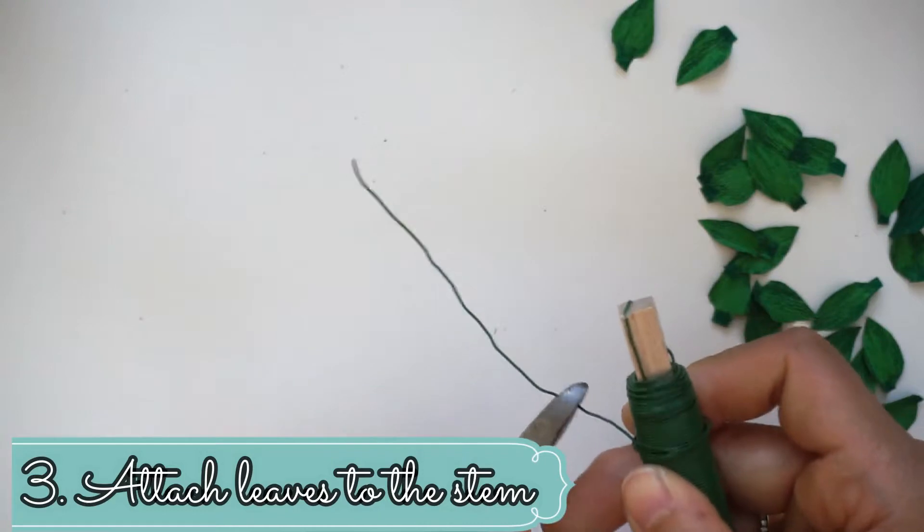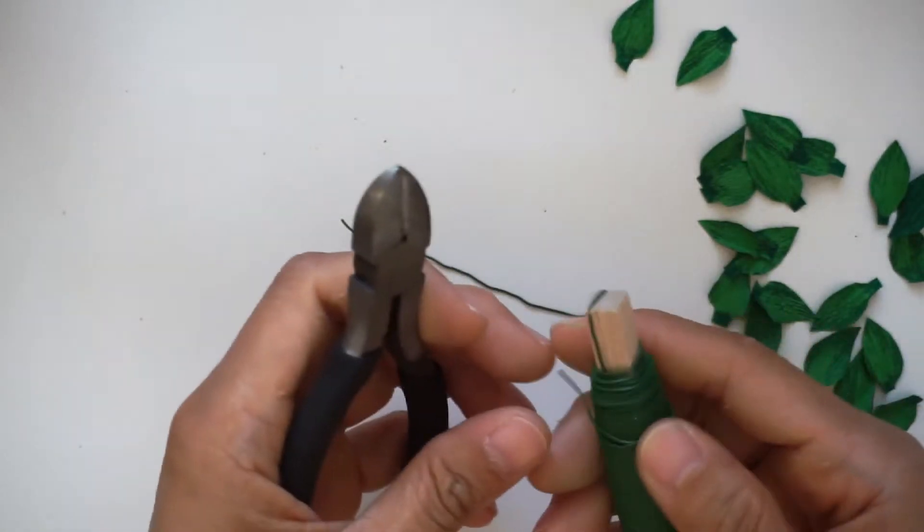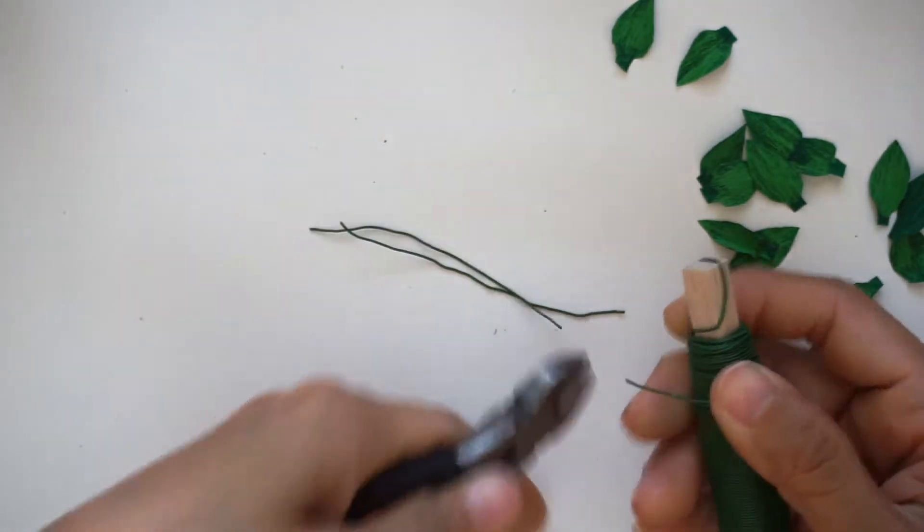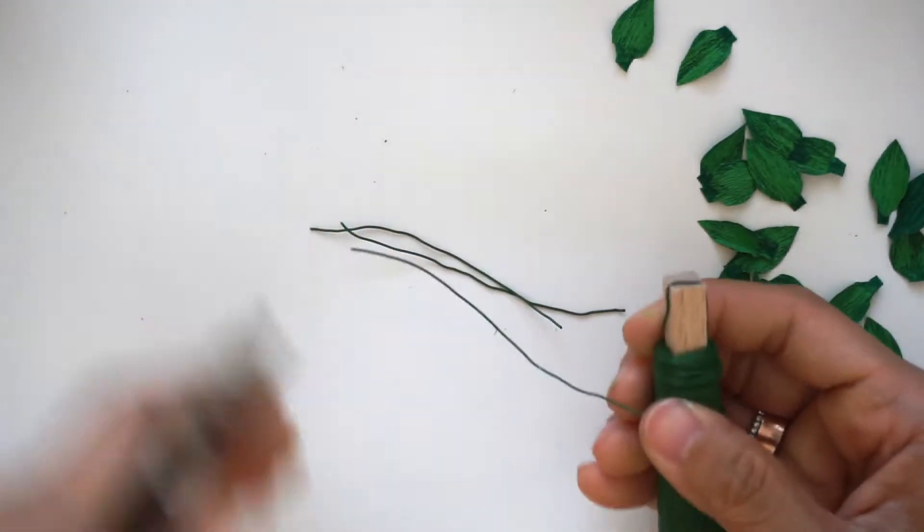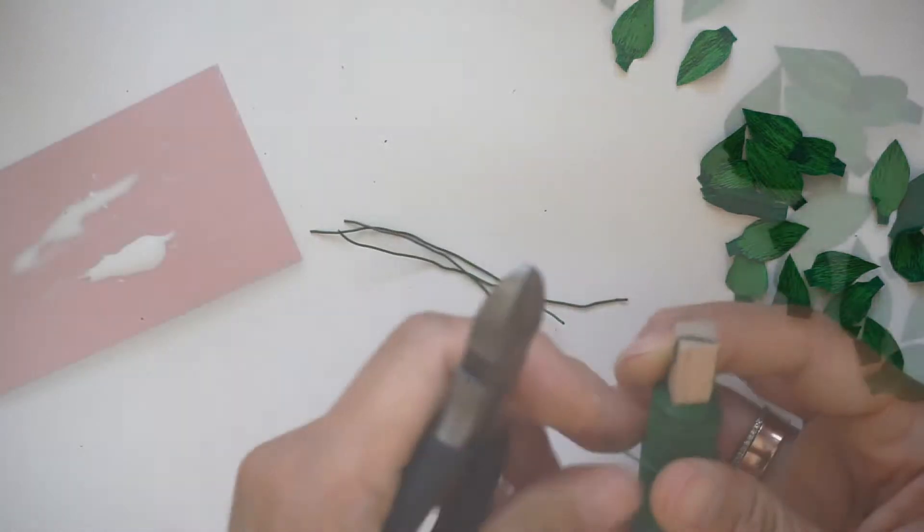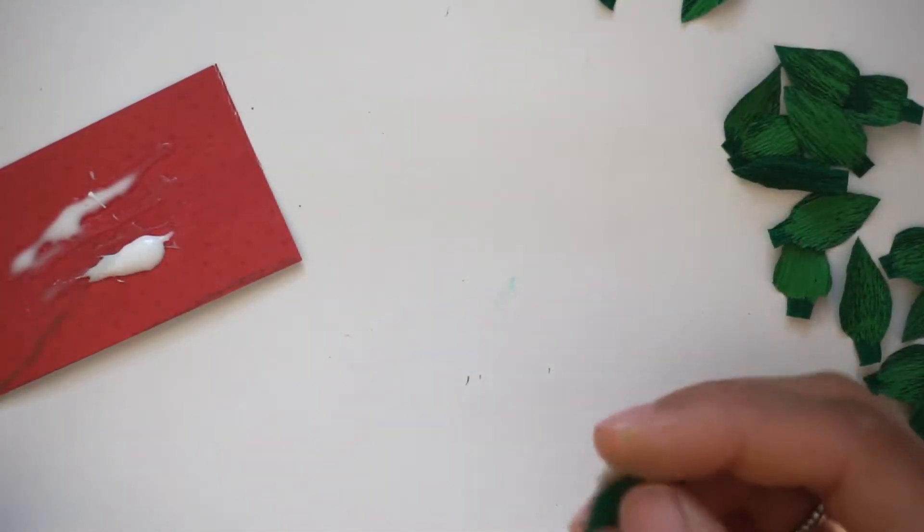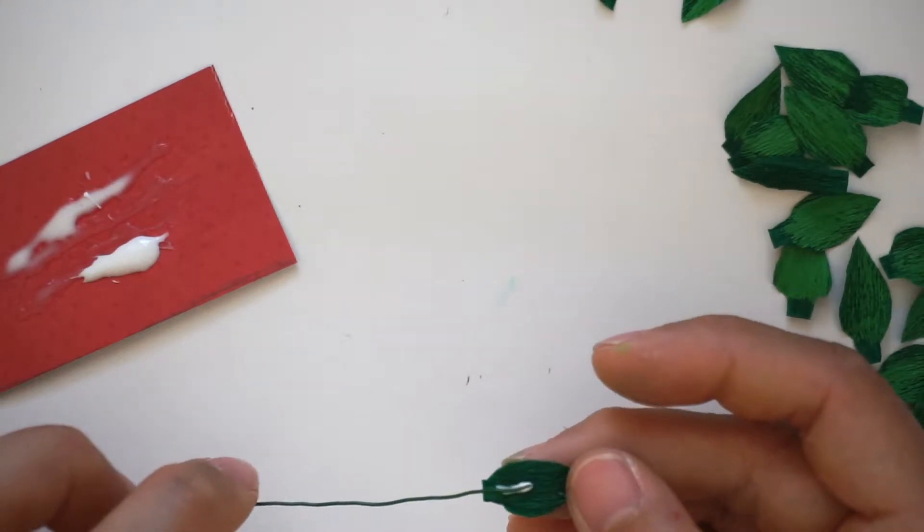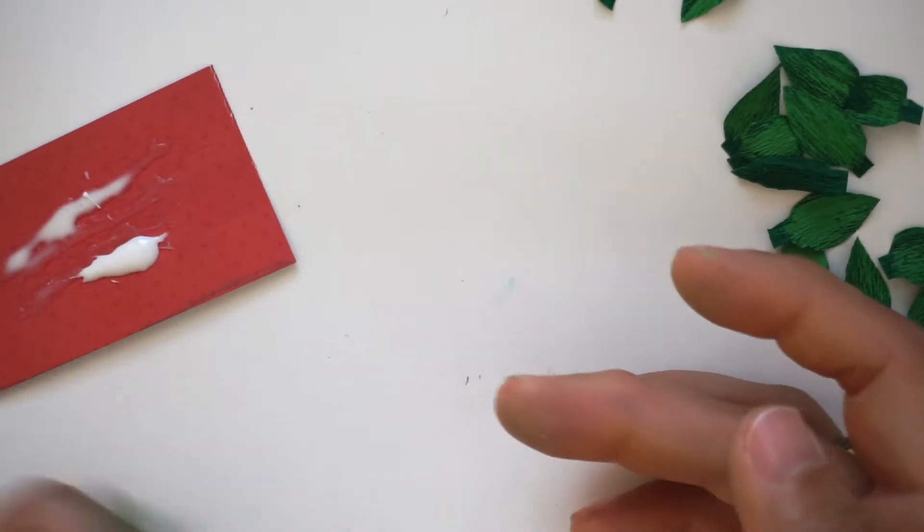Cut several green floral wires, four to six centimeters, to use as a stem for the leaves. Dip the tip of the wire into the glue and then attach the leaf. Use separate wire for each leaf.